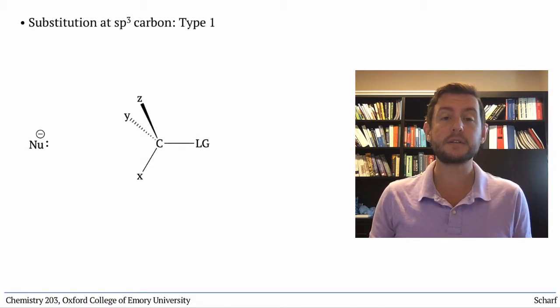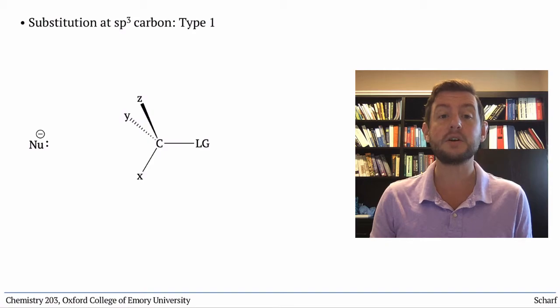The simplest sort of nucleophilic substitution at sp3 carbons involves the attack of a nucleophile directly on sigma star C leaving group.